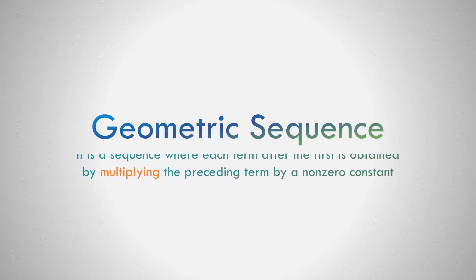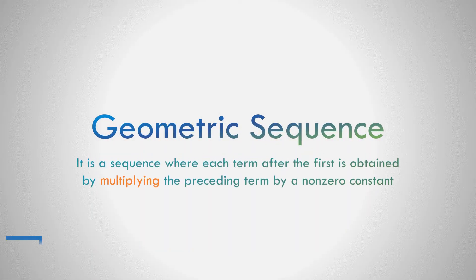What is a geometric sequence? It is a sequence where each term after the first is obtained by multiplying the preceding term by a non-zero constant. As you can see, the key operation is multiplication.